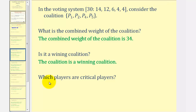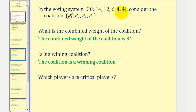We want to determine which players are critical. A player is critical if by leaving the coalition, the coalition changes from winning to losing. If player one leaves, we're left with player two, four, and five, where the weight would be twelve plus four plus four, equal to twenty, which does not meet the quota of thirty. Therefore player one is critical.